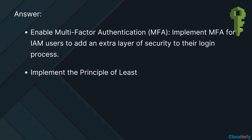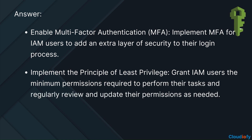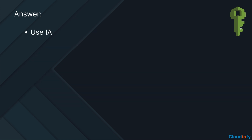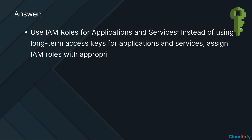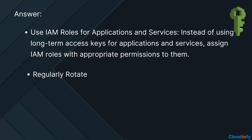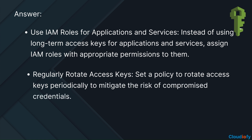Implement the principle of least privilege — grant IAM users the minimum permissions required to perform their tasks, and regularly review and update their permissions as needed. Use IAM roles for applications and services — instead of using long-term access keys, assign IAM roles with appropriate permissions. Regularly rotate access keys — set a policy to rotate access keys periodically to mitigate the risk of compromised credentials.